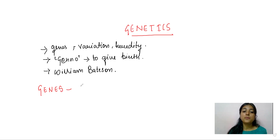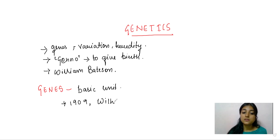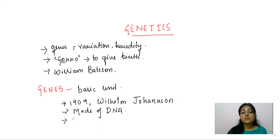Genes are defined as the basic physical and functional unit of inheritance. In 1909, Wilhelm Johansson coined the term 'gene.' Genes are made up of DNA, and they vary from 100 to a million base pairs.